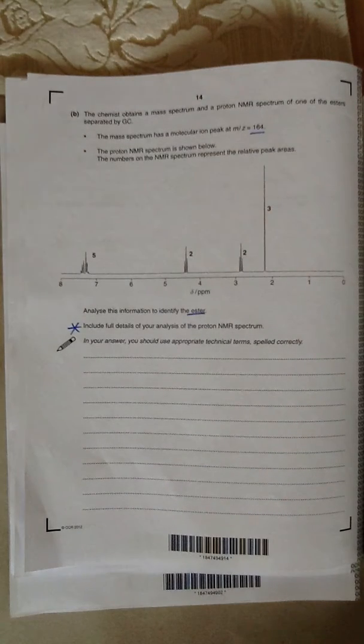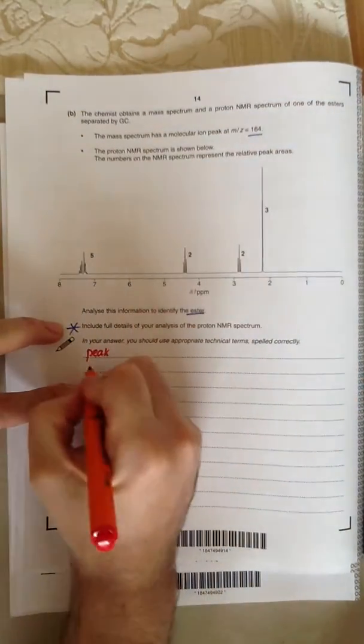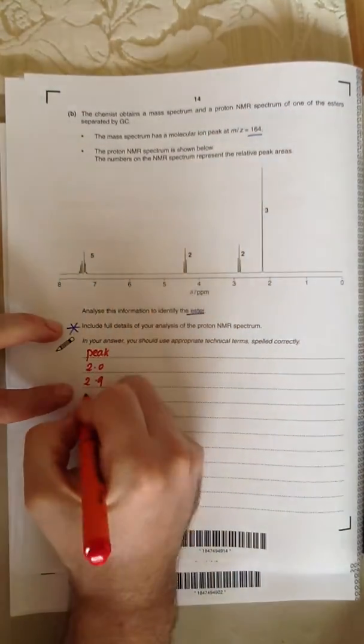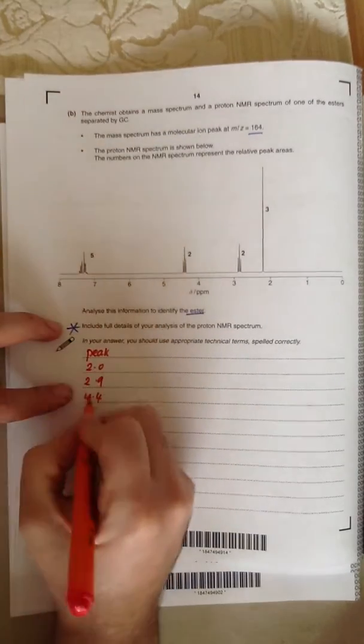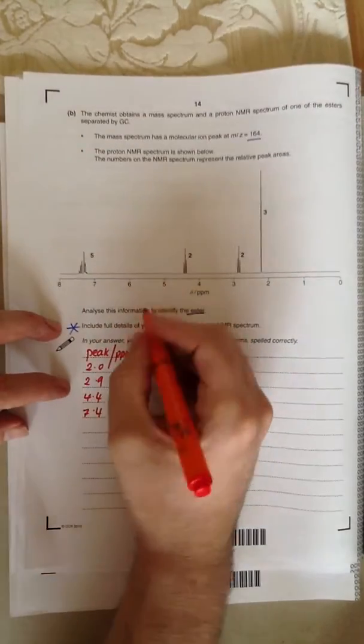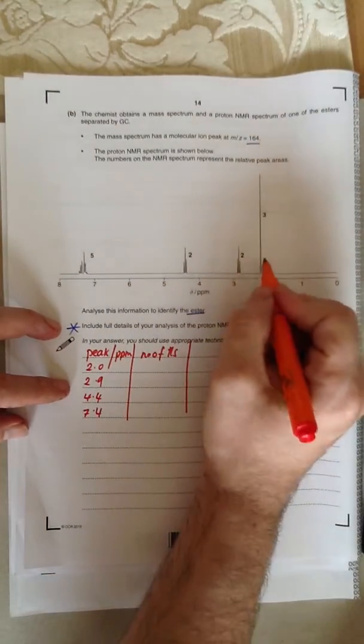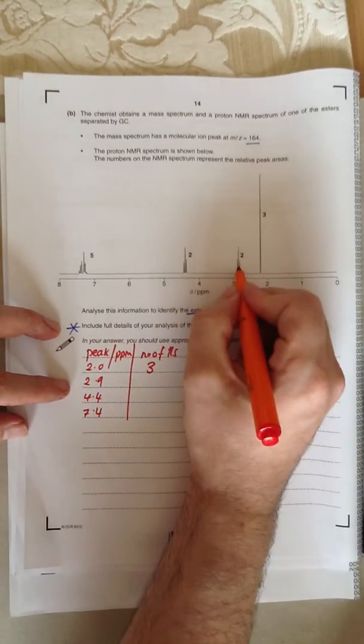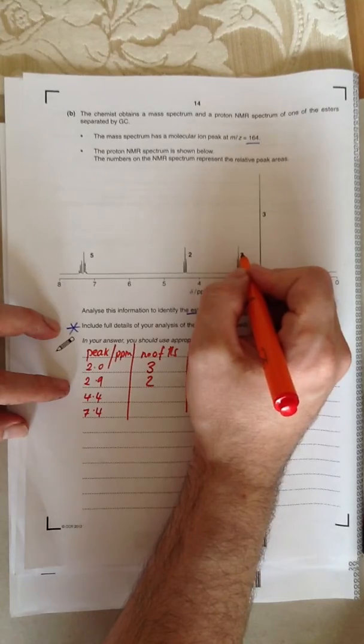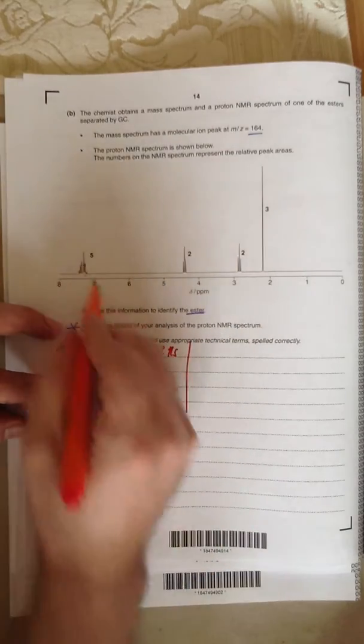The easiest way to do this is to stick it in a table. So if we have the peak, and there's a peak at about 2.0, 2.9, 4.4, and 7.4-ish in ppm. Number of H's. So how many hydrogens are on that one? There are 3. That one there has got 2 hydrogens because there's a 2. The relative peak area of this one is 2, so there's 2 hydrogens. And the relative peak area of the peak at 7.4 is 5.